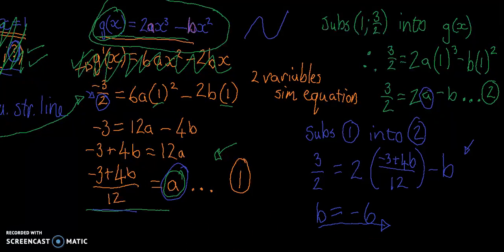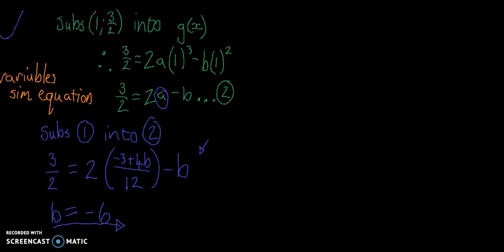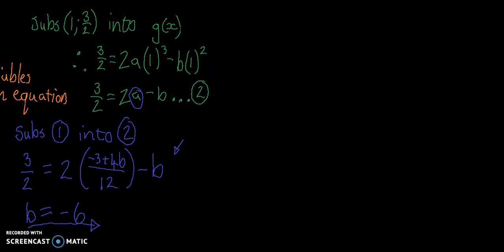So now if we move across, we can figure out what a is. Let's change color to show that we're changing thought. We're going to substitute b equals negative 6 into either 1 or 2. Whichever one looks nicer. I think number 2 looks nicer. So I'm going to do that.